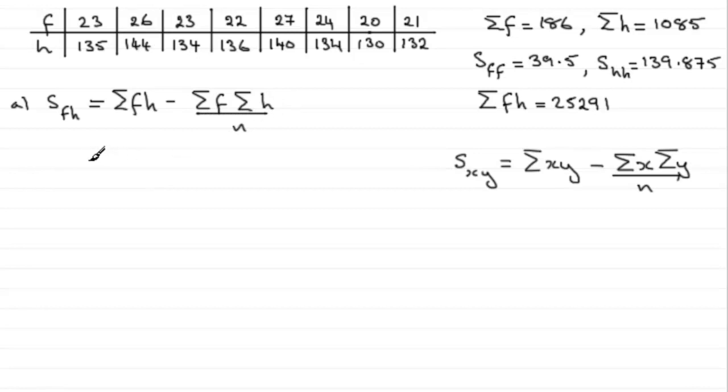So we just need to fill in the values now. Sigma fh we're given here is 25291, and then minus the sum of all the f values, 186, multiplied by sum of h which is 1085.